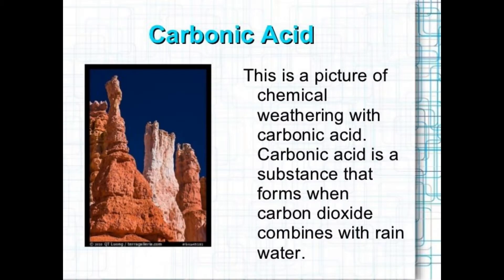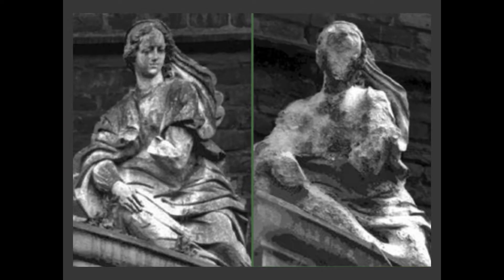Carbonic acid and chemical weathering: carbonic acid sounds scary, but when rain falls through the atmosphere it combines with carbon dioxide and becomes a weak acid. Natural rainwater is slightly acidic — it's called carbonic acid — and it causes certain rocks to weather. Limestone is particularly susceptible, which is where you get stalactites and stalagmites. The CO2 combines with water to form carbonic acid, and over the years that dissolves limestone statues and other things.